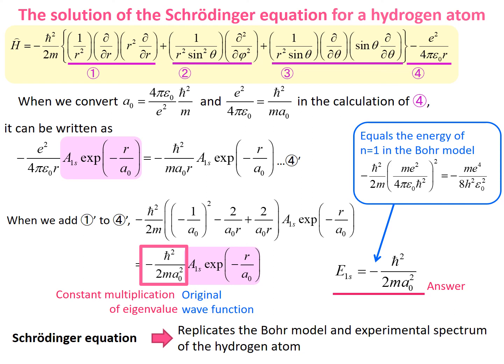As you can see, the energy values of the solution of the Schrödinger equation for the hydrogen atom and the Bohr model match perfectly, which means that the solution of the Schrödinger equation replicates the spectrum of the hydrogen atom.